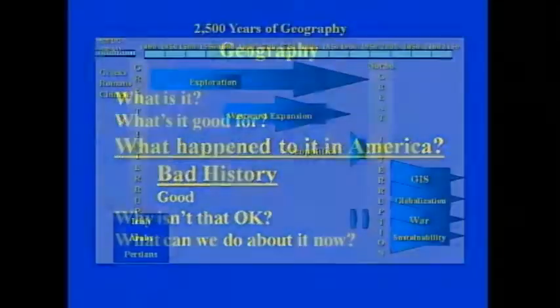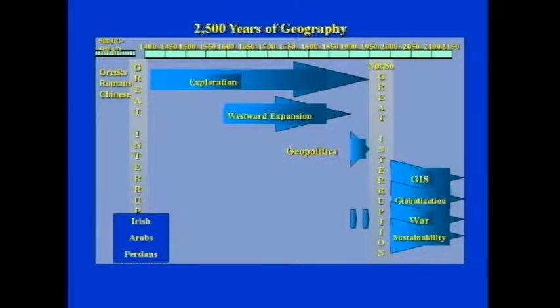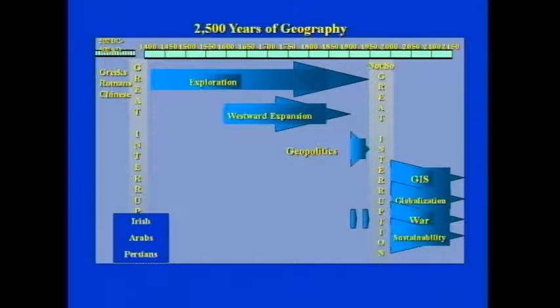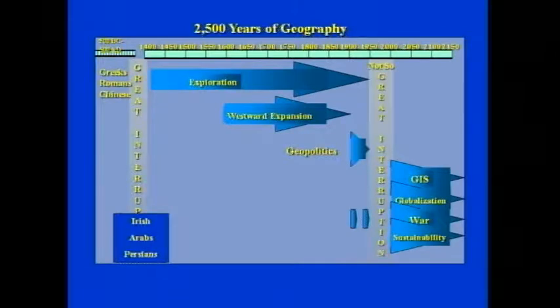So what happened to it in America? There's some bad history. The global trend over 2,500 years: geography started out very strong among the Greeks, Romans, and Chinese. During the Dark Ages it was preserved by Irish monks and Arabs and Persians at the peripheries of European civilization. It came back starting about 1400, thrived for centuries based on exploration, from about 1600 to 1900 on westward expansion, for the first half of the 20th century on geopolitics. And now it's coming back into favor because of GIS, globalization, war, and sustainability.